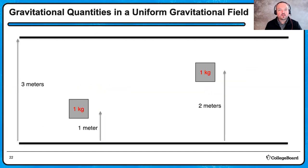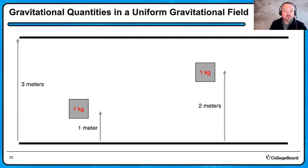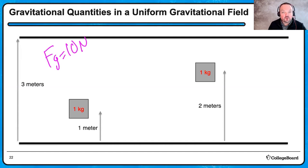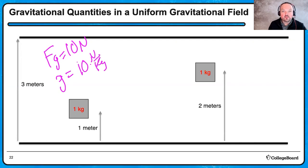For a 1 kg object at one meter above the ground, the gravitational force is about 10 N, the gravitational field strength is 10 N/kg at both one and two meters since it's a uniform field. The gravitational potential energy UG = MGH = 10 J at one meter and 20 J at two meters. The gravitational potential — energy per mass — would be GH: 10 J/kg at one meter and 20 J/kg at two meters. F_G = mg, UG = mgH, and gravitational potential = gH (energy per kilogram).